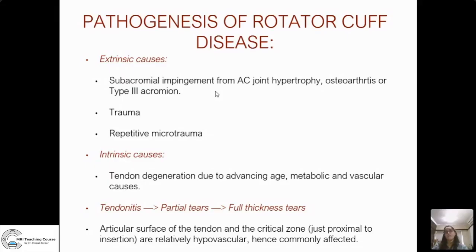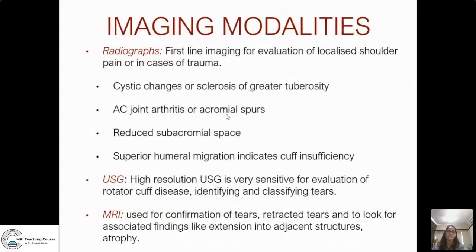Intrinsic causes are degenerative changes within the cuff itself, which could be age-related or due to underlying metabolic or vascular causes. There is typically a spectrum of disease in the rotator cuff which includes tendinitis, progressing through partial tears, and then to full thickness tears. The articular surface of the tendon and the critical zone — just proximal to the insertion — are relatively hypovascular portions and hence the most commonly affected segments. Supraspinatus is the commonest tendon involved.